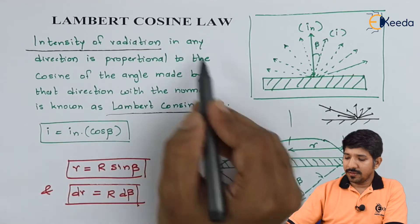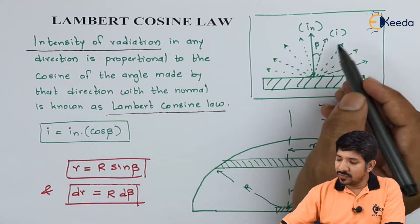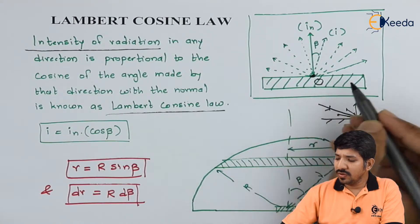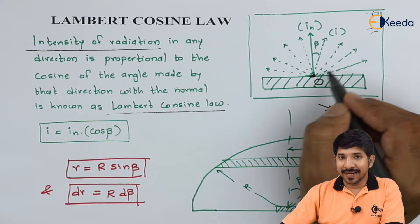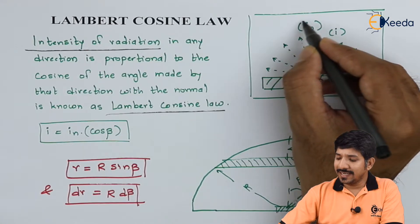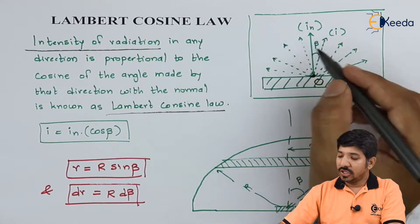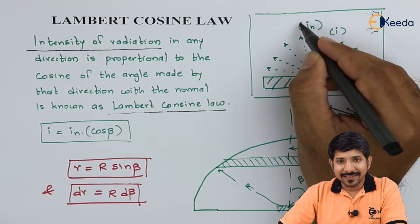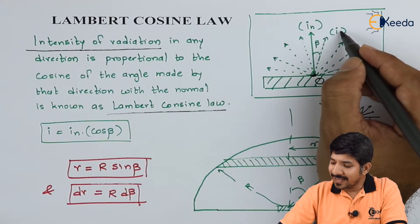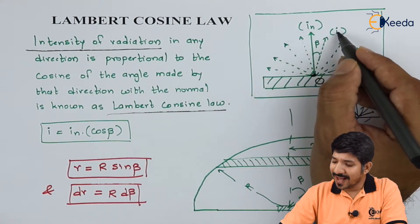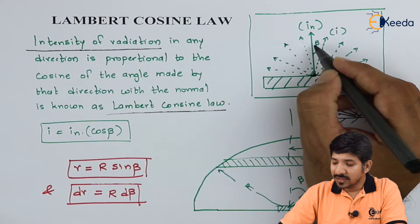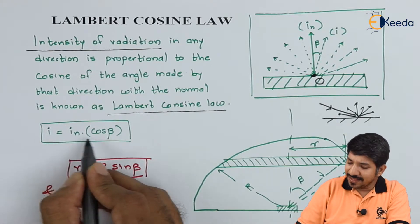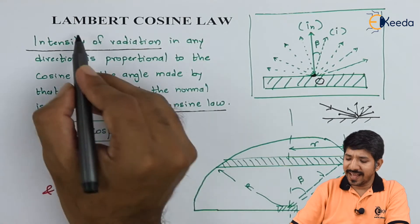Now, if I want to express the same in mathematics, we need to understand this diagram. Consider that radiations are coming out from point O in all the hemispherical directions. Here, IN indicates the intensity of radiation in the normal direction — that is, IN is the intensity of radiation normal to the given surface. And I can be any other radiation at angle beta to the normal. In that case, I itself can be given as IN times cosine of beta. This is Lambert's cosine law.